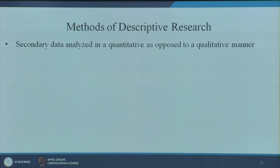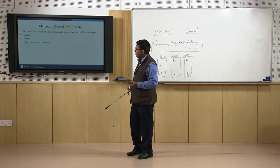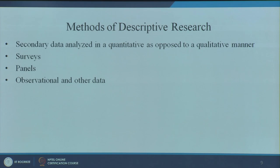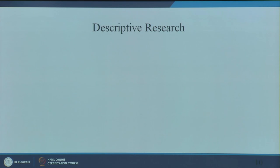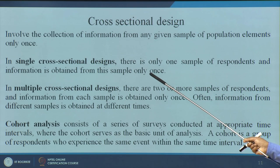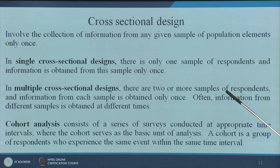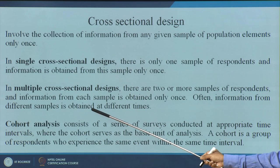The methods used in descriptive research include both secondary and primary data. Secondary data is analyzed quantitatively. Primary methods include surveys, panels — where the same group of consumers or participants is observed repeatedly — and observational data. In a single cross-sectional design, one sample of respondents provides information once. In a multiple cross-sectional design, there are two or more samples of respondents and information is obtained once from each, often at different times.